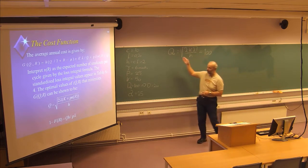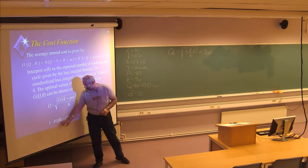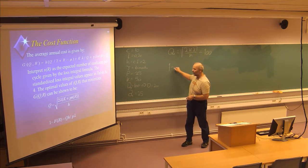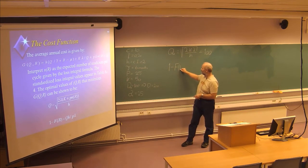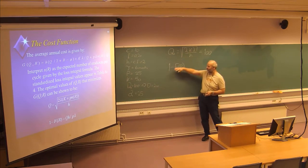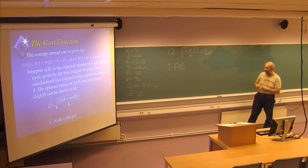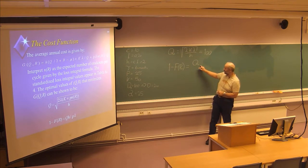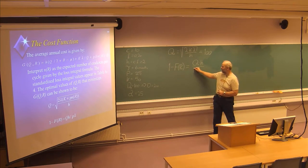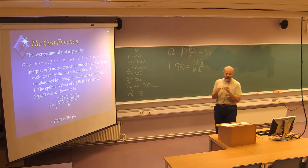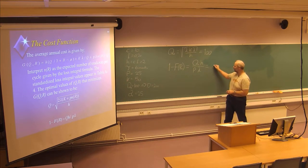With Q0 = 100, we can calculate the probability of a stock-out using the formula 1 minus F(R0). Using Q0 = 100, H = 2, P = 25, and lambda = 200 in the formula Q×H / (P×lambda), we get 0.04. This means we need a reorder point R0 for which the stock-out probability is 4%.